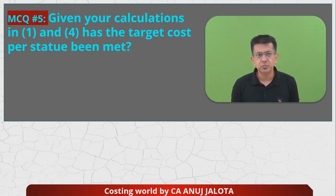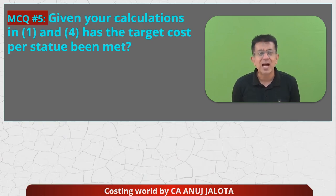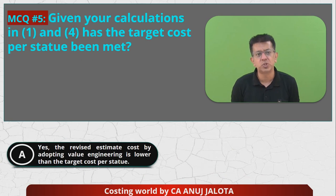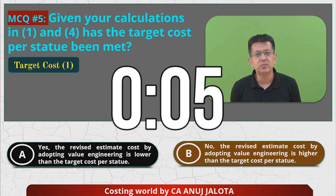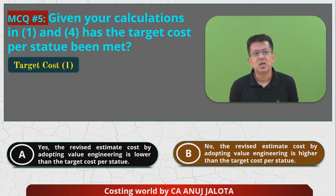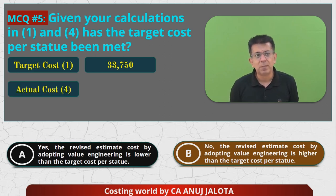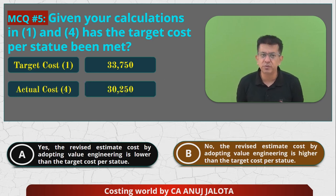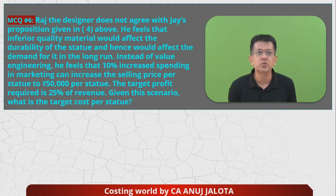MCQ 5: Given calculations in parts 1 and 4 — in part 1 the target cost was 33,750 and in part 4 the cost after value engineering is 30,250 — has the target cost per statue been met? Yes, it has, since 30,250 is lower than the target of 33,750. Answer A is correct.